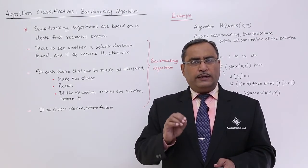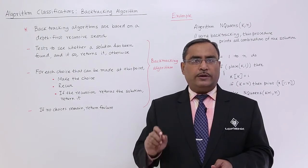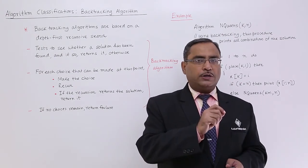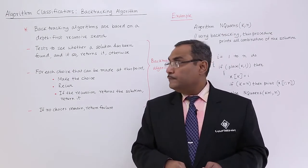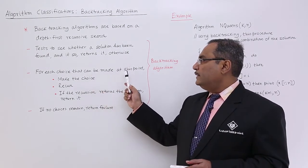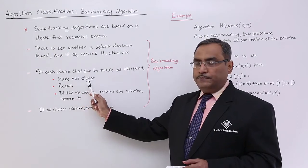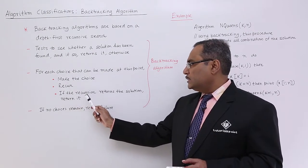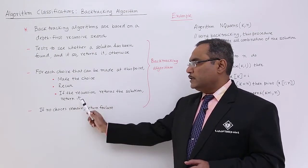That means whenever it will get one solution, the recursive algorithm will return the solution to the respective caller. For each choice that can be made at this point, make the choice, recur. If the recursion returns the solution, return it.